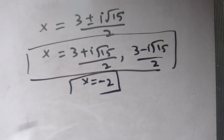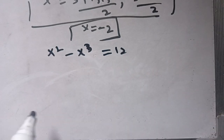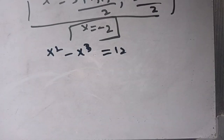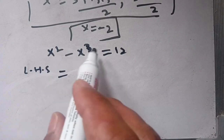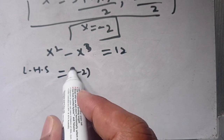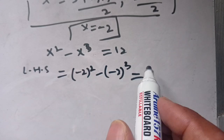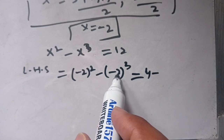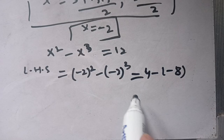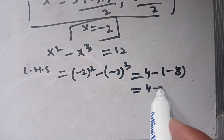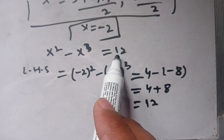Our given equation is x squared minus x cubed equals 12. By substituting x equals minus 2, we take the left hand side: (minus 2) squared minus (minus 2) cubed. That equals 4 minus (minus 8). Minus times minus gives plus, so it becomes 4 plus 8, which equals 12. Our right hand side is also equal to 12.